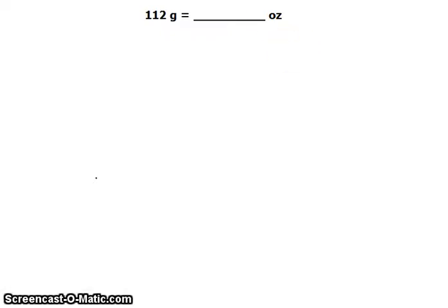The unit ounces is abbreviated to oz. We need some information to relate these units. First, 1 kilogram is equivalent to 1000 grams.